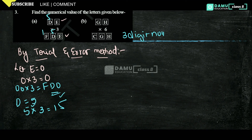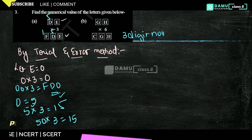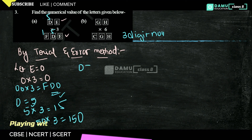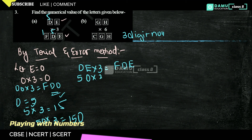So 50 into 3 gives 150. The condition is DE into 3 equals FDE. So D is 5, E is 0: 50 into 3 equals 150. Here 0, here 0, here 5, here 5 — condition satisfied.